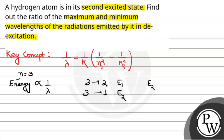Energy of E2 (n=3 to n=1) is greater than E1 (n=3 to n=2). Jis mein zyada energy lag raha hai, uska wavelength lambda minimum hoga. Aur jis mein kam energy lag raha hai, uska wavelength lambda maximum hoga. So E1 ke saath lambda max associated hai, aur E2 ke saath lambda min associated hai.